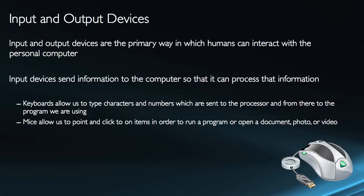Keyboards and mice are your primary input devices. Keyboards allow us to type characters and numbers, and those are sent to the processor and from there to the program we happen to be using — like a Word document, Excel spreadsheet, or Internet Explorer, our web browser. Mice allow us to point and click on items in order to run a program or open a document, photo, or video. We can double-click to open it up.